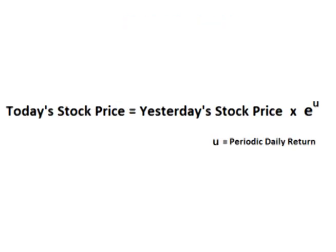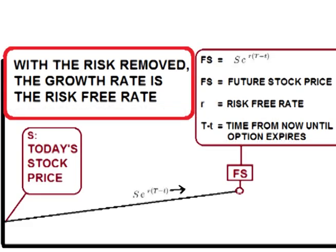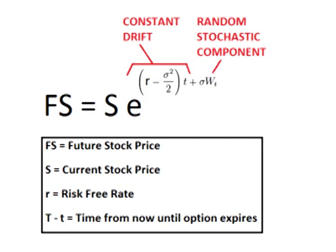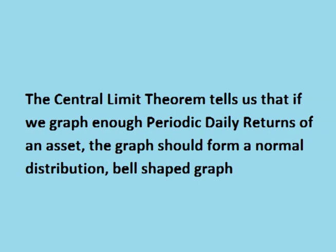So let's break that down. Today's stock price equals yesterday's stock price times E raised to U. If we could remove all risk from the stock, it should drift up at a constant rate — the same rate as a risk-free asset. Adding the risk back in means adding in the volatility, which erodes the drift at the rate of half the variance over time. Because each day the asset can increase or decrease at any random rate, the central limit theorem in statistics tells us that we can assume the periodic daily rates of return will be normally distributed.